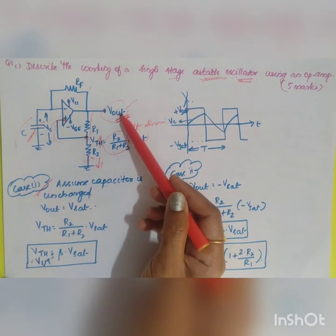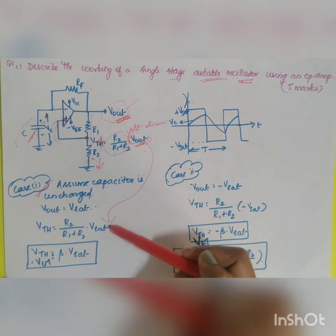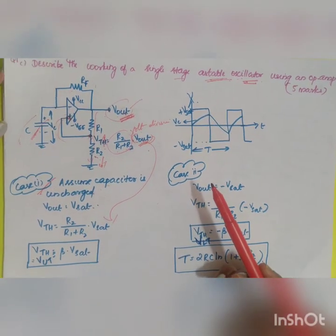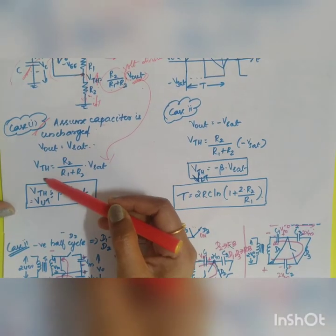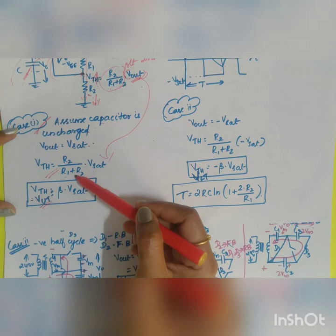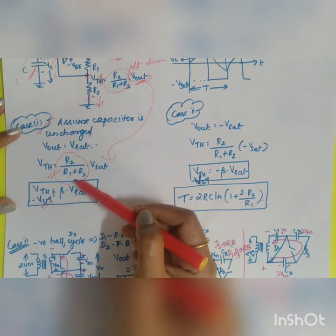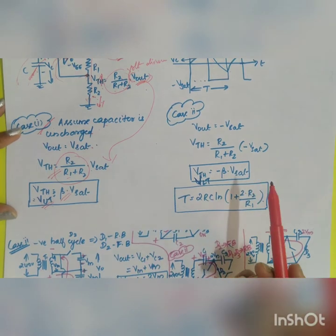When Vout is equal to plus Vsat, what will be Vthevenin? Instead of Vout, you have substituted it as plus Vsat. This is your V upper threshold. VUT will be equal to R2 divided by R1 plus R2 into Vsat. This R2 divided by R1 plus R2 is taken as beta Vsat.